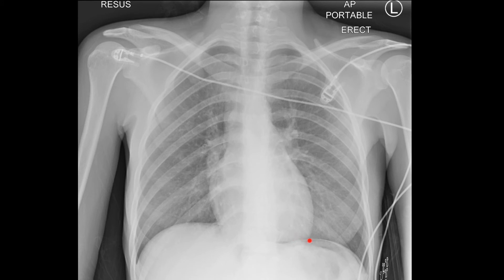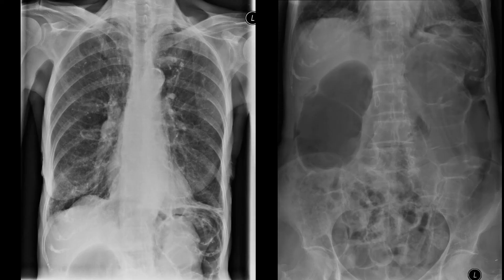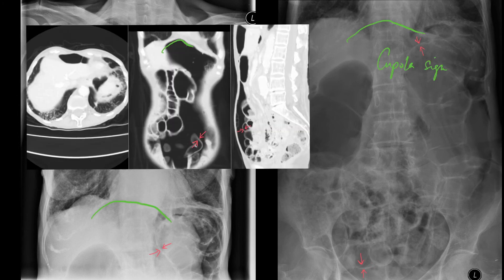This is a very subtle pneumoperitoneum on an erect chest x-ray, due to a perforated duodenal ulcer. Here we can see free gas underneath the central portion of the diaphragm — the so-called cupola sign — on both an erect chest x-ray and a supine film. Rigler's sign is also well seen: both sides of the bowel wall due to pneumoperitoneum. The corresponding CT shows the falciform ligament, the cupola sign, and a sagittal reconstruction confirming the pneumoperitoneum. Rigler's sign is present on CT just as much as on plain films.